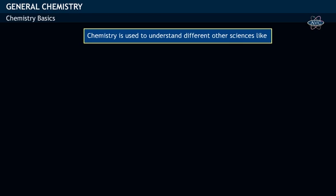The basic understanding of chemistry helps us to learn other sciences like physics, biology, astronomy, engineering, and medicine.